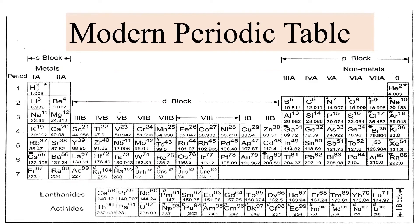Look at this — lithium, beryllium, boron, carbon, nitrogen, oxygen, fluorine, neon. This forms a horizontal row of the periodic table, and this is the second period of the periodic table.